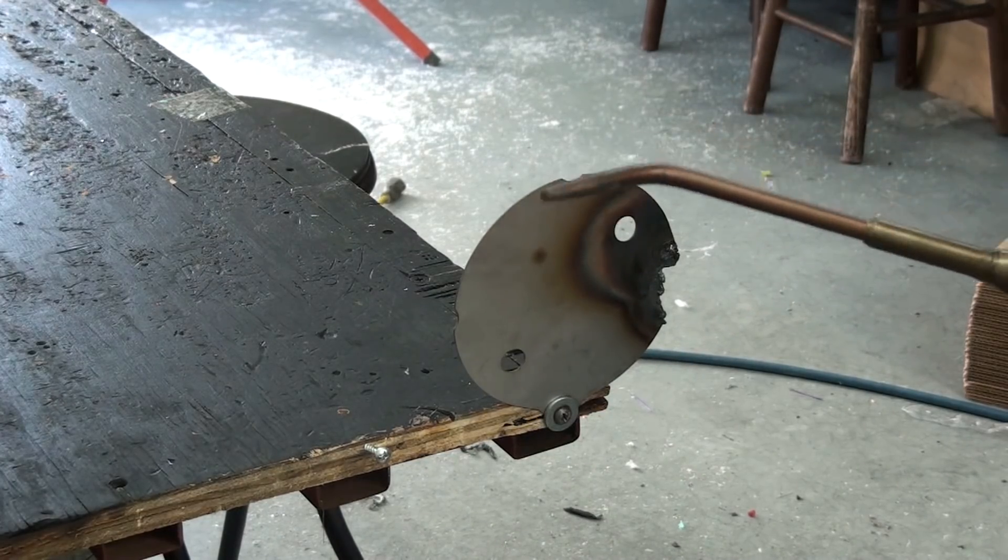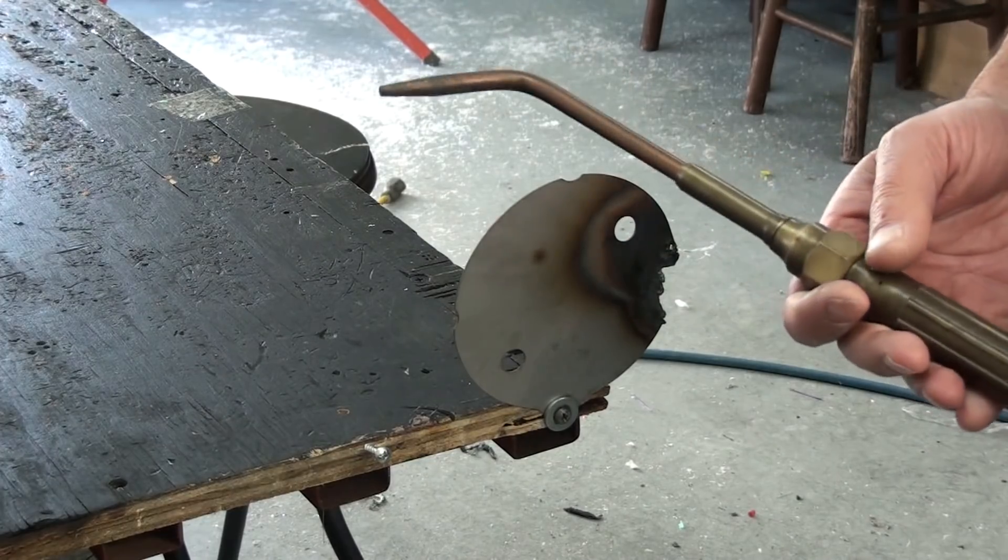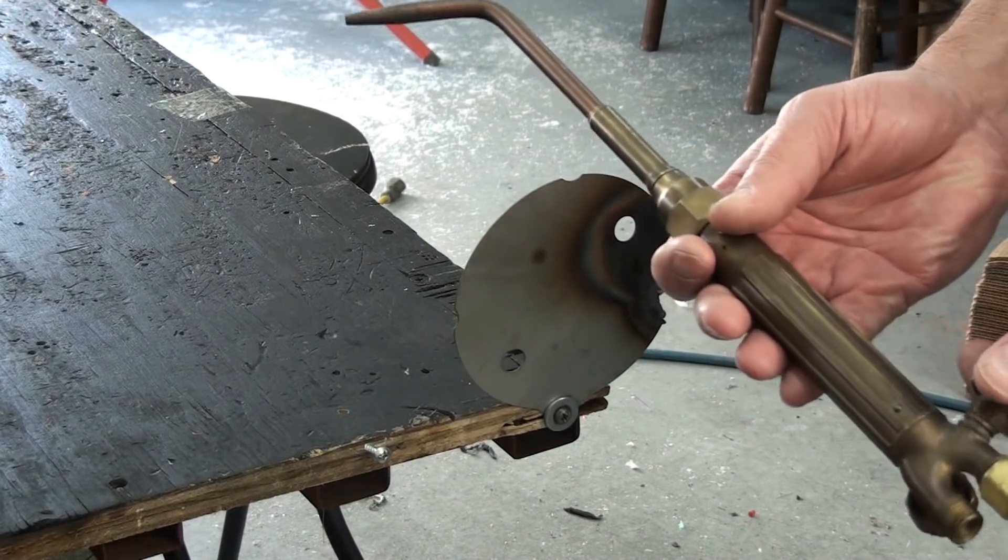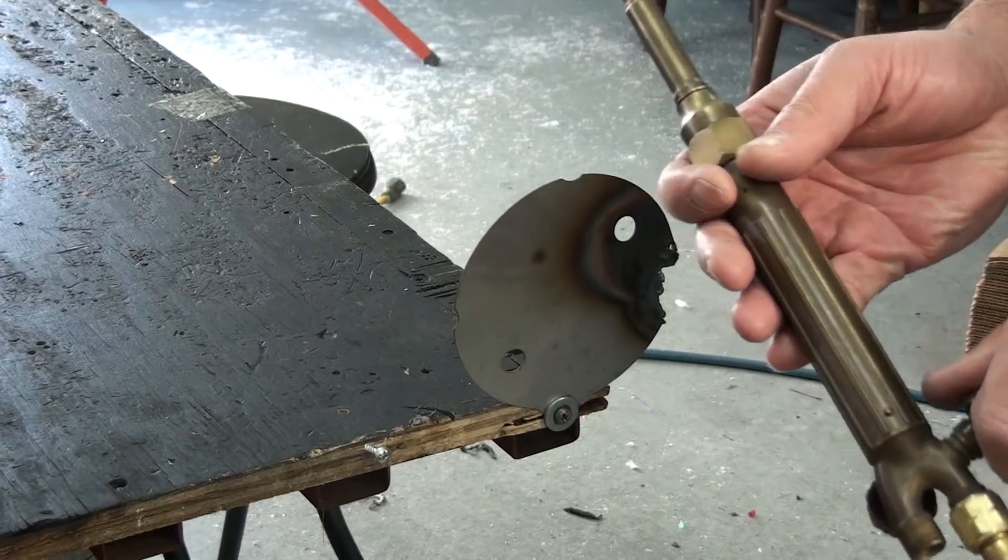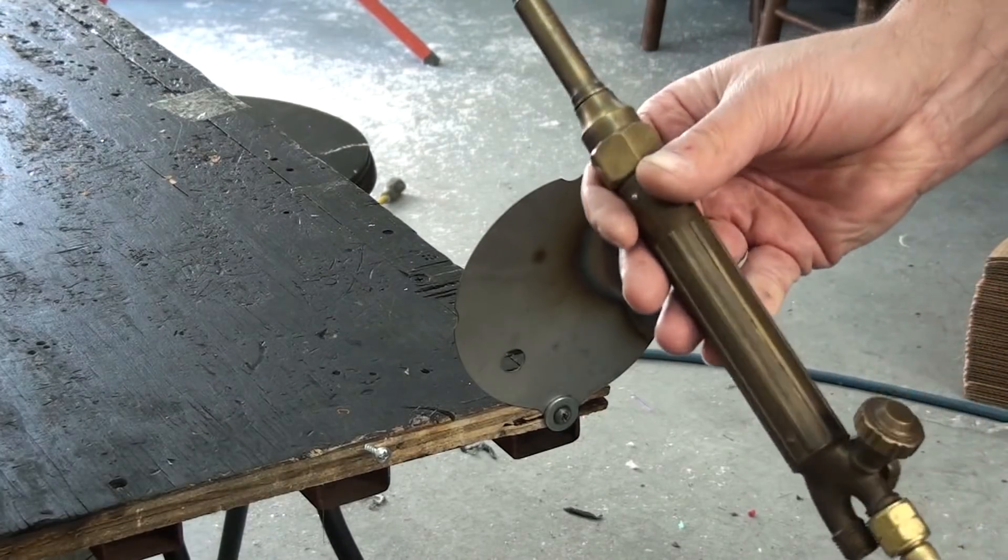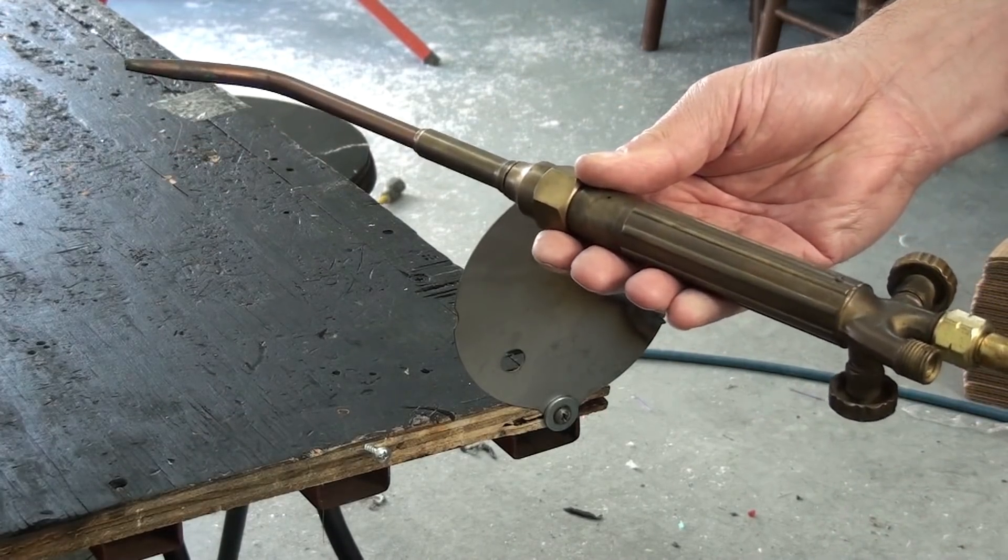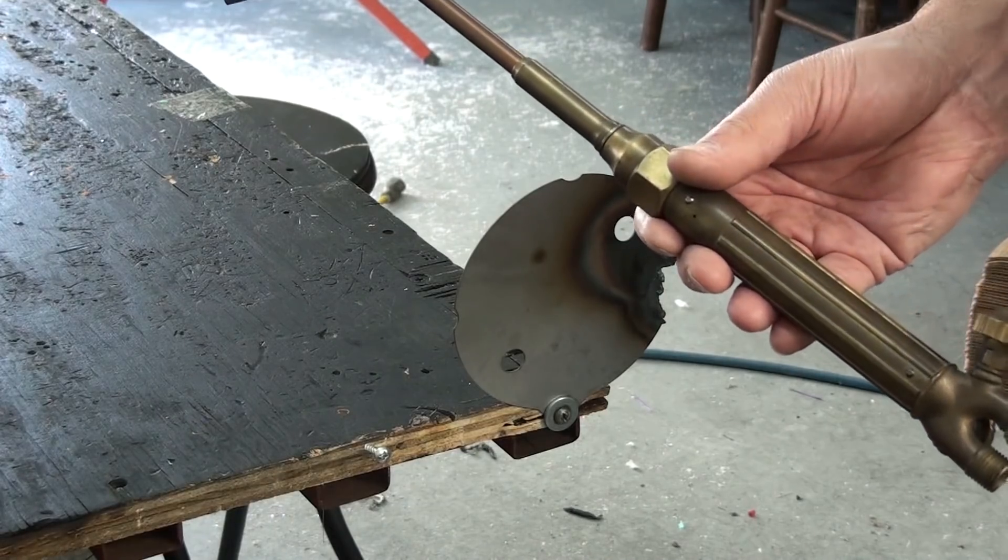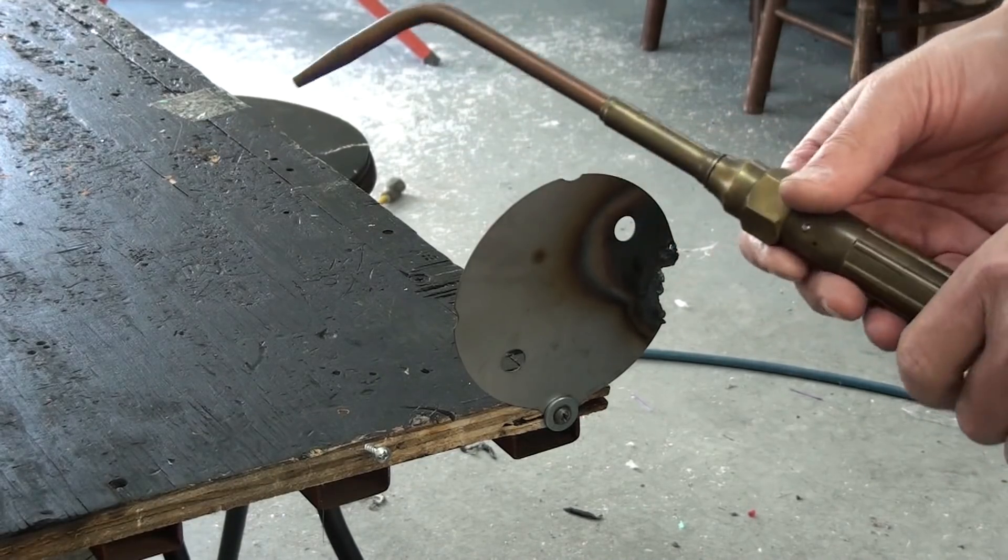One thing to point out when you're using this system with a torch to extinguish the flame, you need to immediately turn it back on. Because if you don't it will build up pressure in the tank and it will cause a leak.